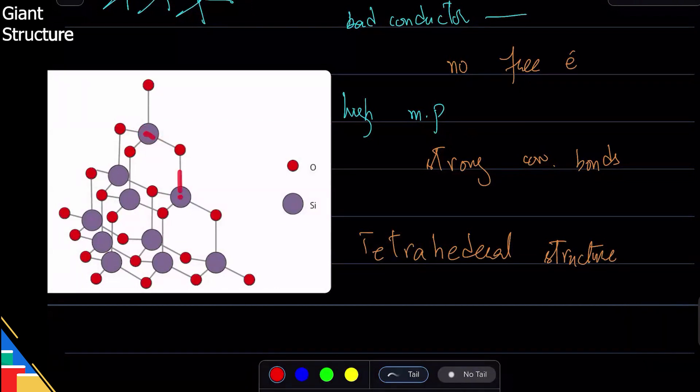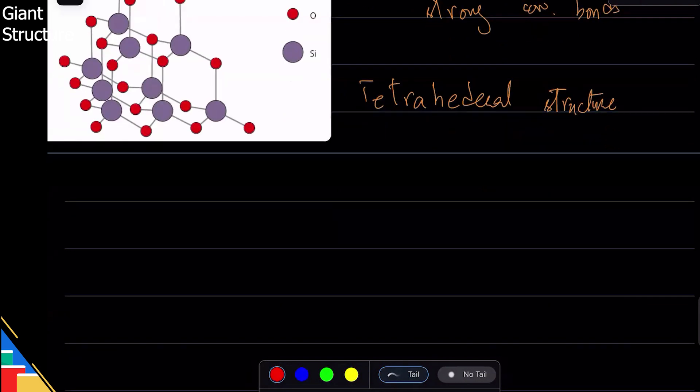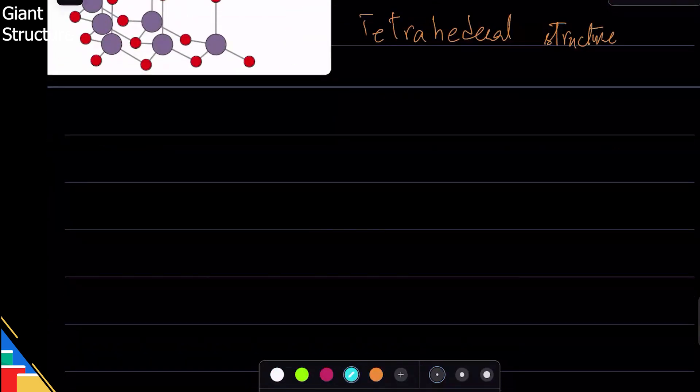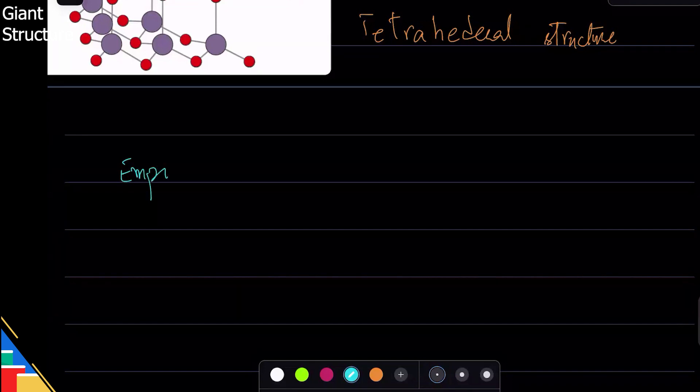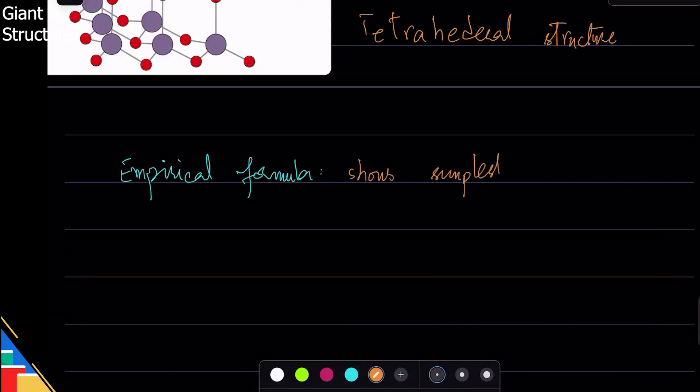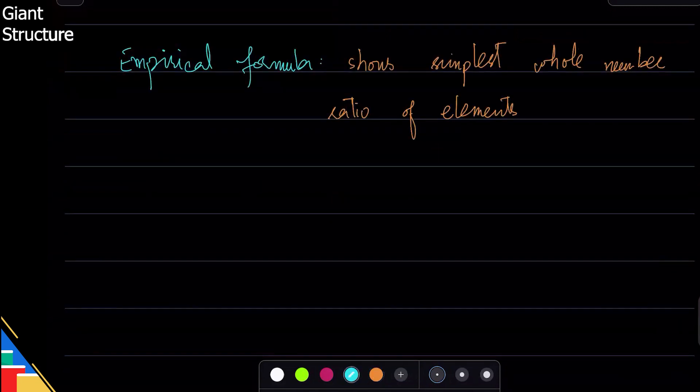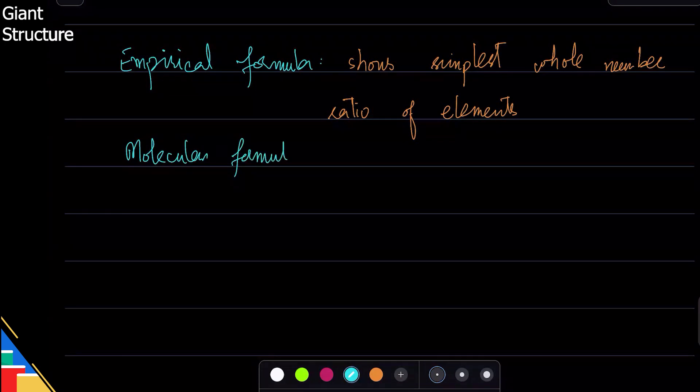Now I'm going to talk about the formulas of lattices. Wherever there's a lattice, we will use empirical formula. Empirical formula's definition you should know: it is the formula that shows simplest whole number ratio of elements. Then there is molecular formula.